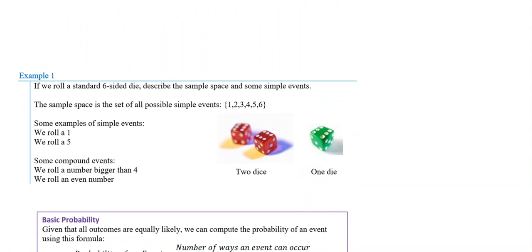If we roll a standard six-sided die, describe the sample space and some simple events. The sample space is the set of all possible simple events — notice it's written like the universal set from the last unit. What's in our sample space is all the numbers on the die: one to six. Simple events would be rolling a one, rolling a five, rolling a three — anything like that.